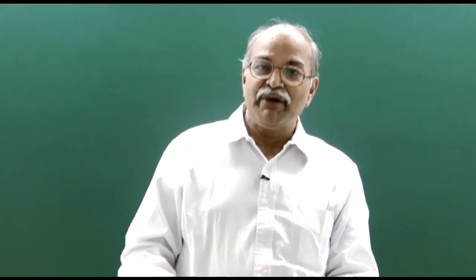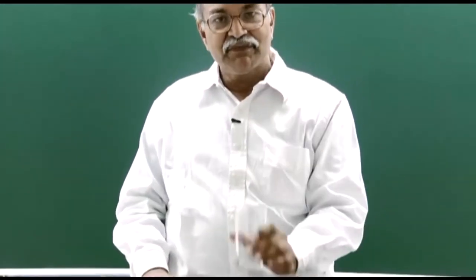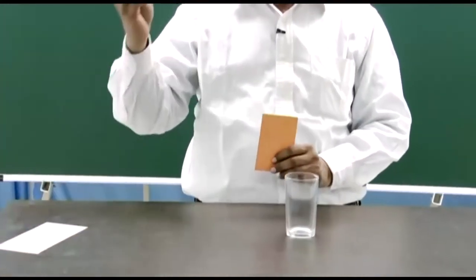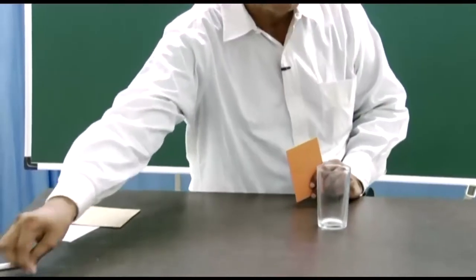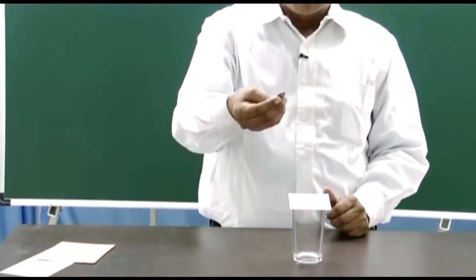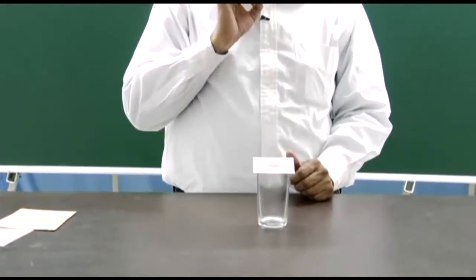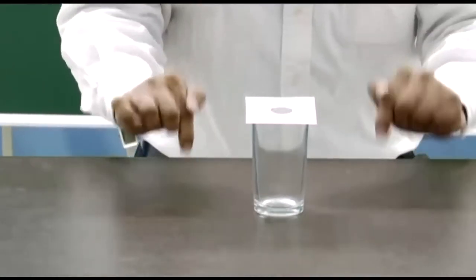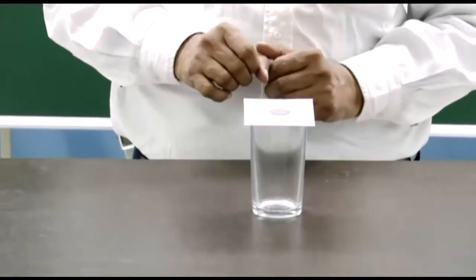I will start with a very famous old experiment known as the card-coin experiment. You have a glass tumbler, some kind of card, and a coin. You place the card on top of the tumbler, place the coin on the card, then flick the card — and the coin gets into the tumbler. Let us do the experiment and see.